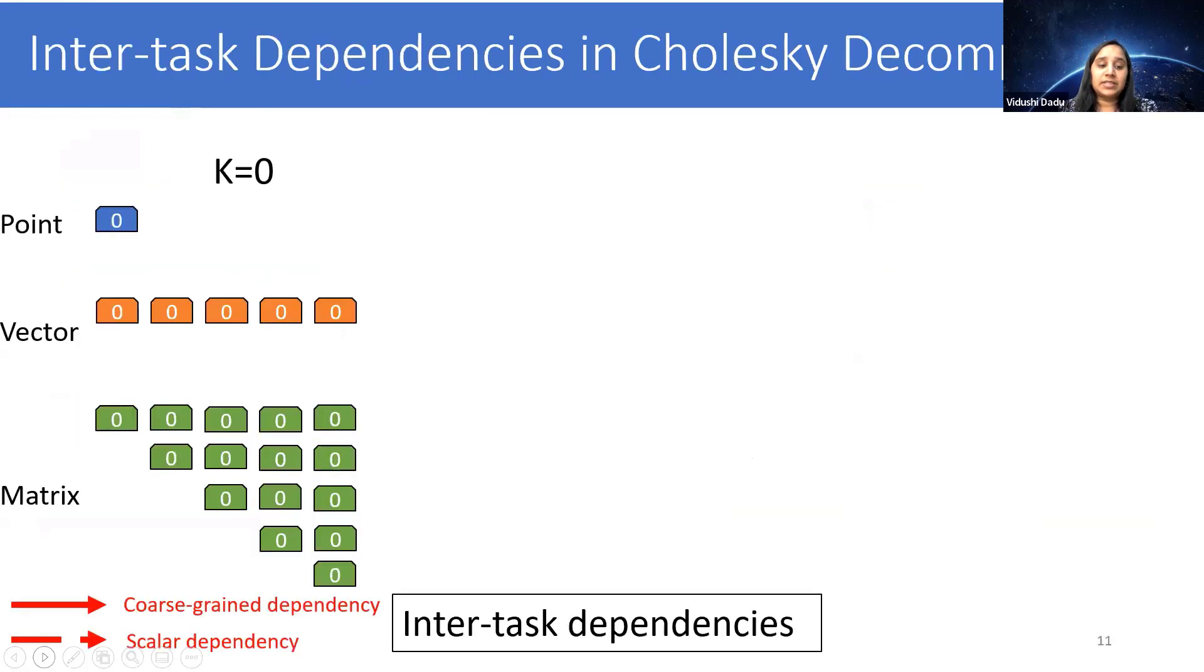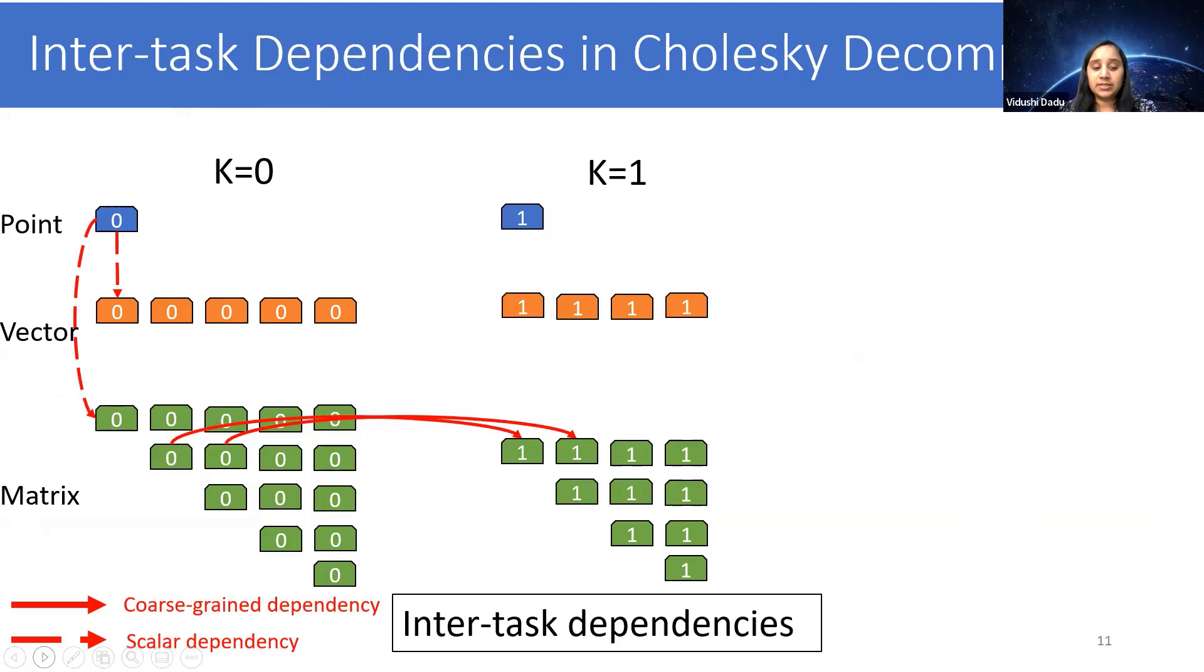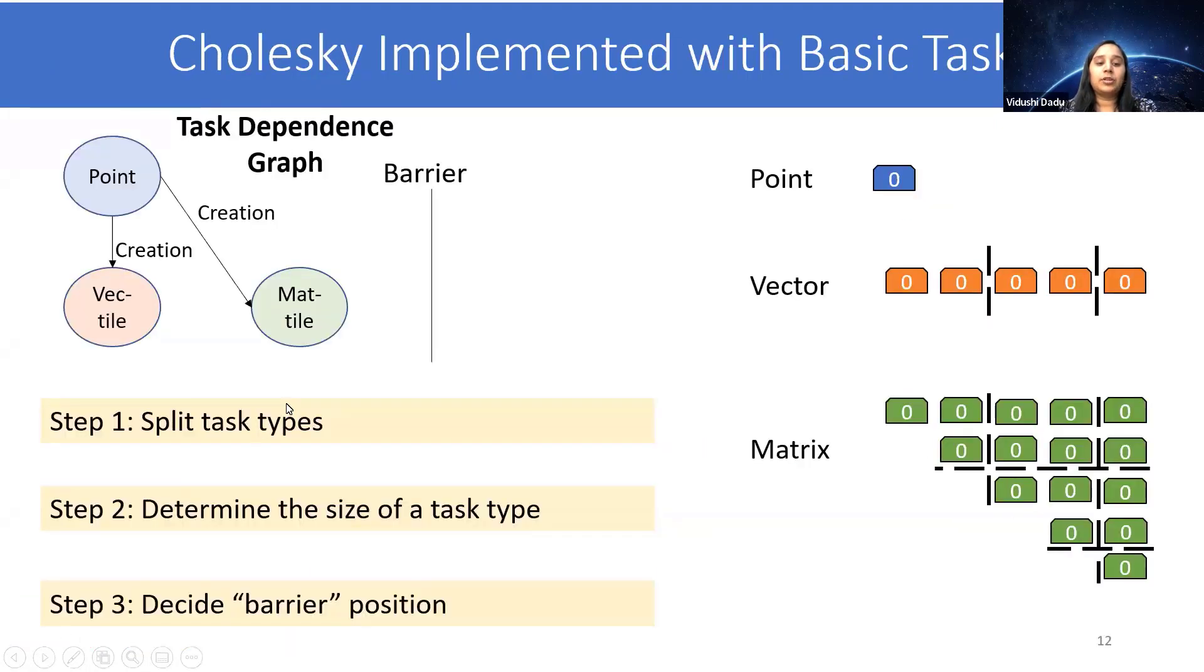So to understand the dependencies at a coarse-grained level, let's look at multiple iterations. What happens here is that across iterations, there is a coarse-grained dependency between each element of the matrix. Typically, these dependencies are enforced only at a coarse-grained level. That's why they would put a complete barrier on the task dependence graph.